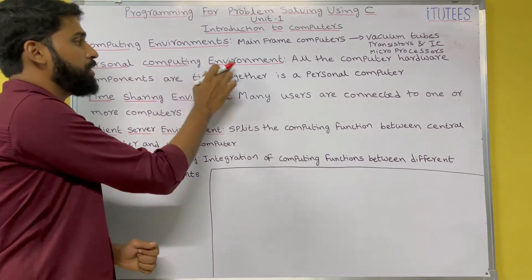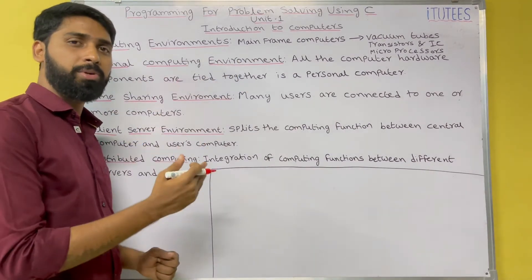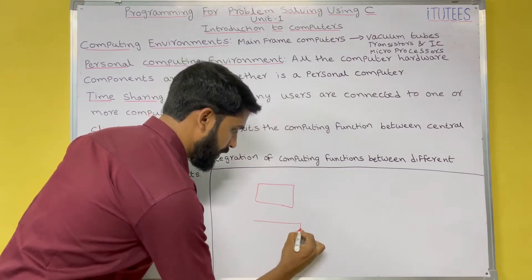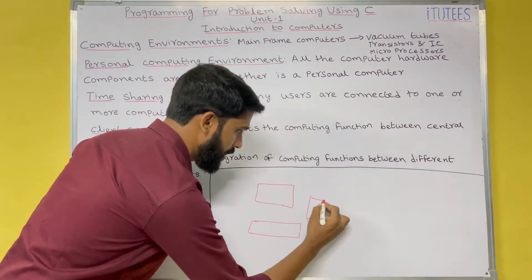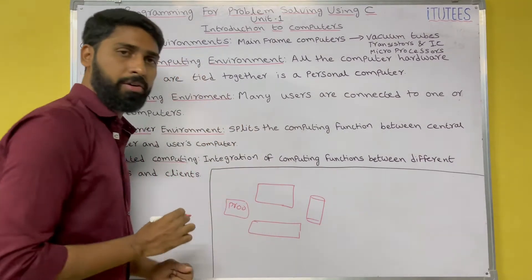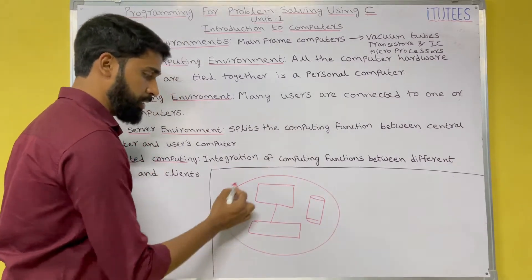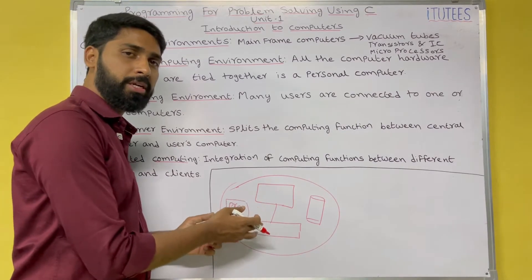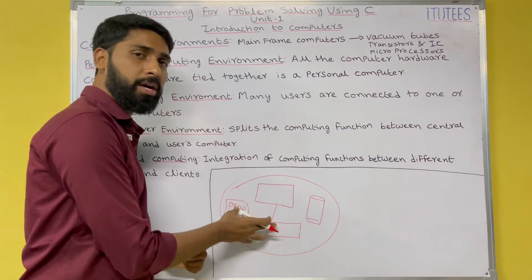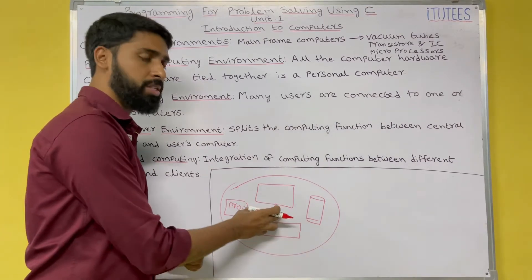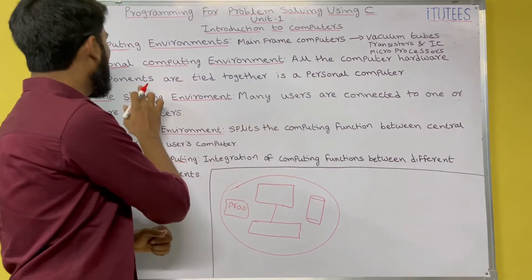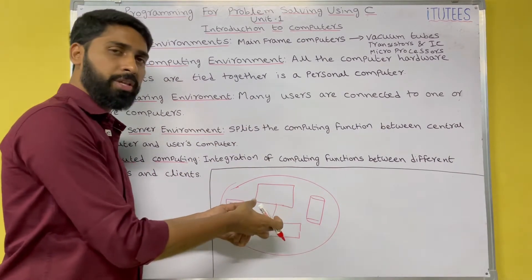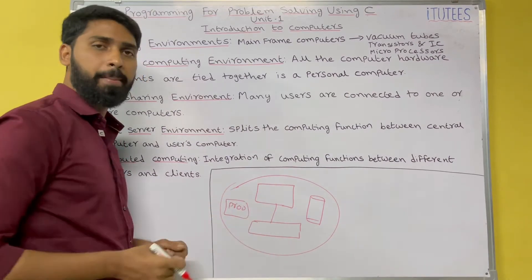The first one is the personal computing environment. A computer is a combination of different hardware devices — for example, a monitor, keyboard, hard disk, and processor. When we combine all these components, we call it a personal computer. The data is stored and related to one person; it is not transferred to any other computer or network. All the hardware components tied together, used by only one person at a time, is called a personal computer.